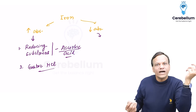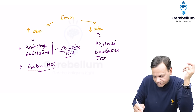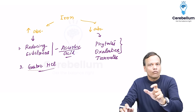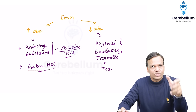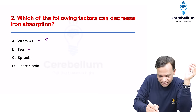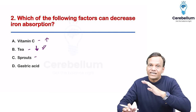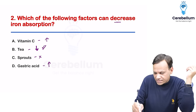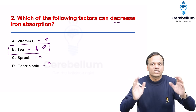Factors which decrease iron absorption include phytates, oxalates, and tannates. Phytates and oxalates are present in food, so we avoid taking iron tablets with food. Tannates are present in tea and coffee, so tea should not be taken with iron tablets. Sprouts contain phytate but during sprouting the phytate content is reduced. Gastric acid increases absorption. The question asks what decreases it — the answer is tea.